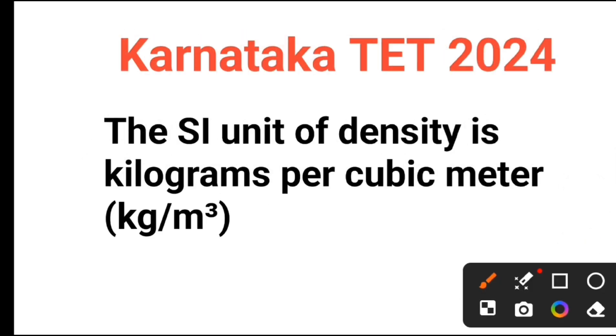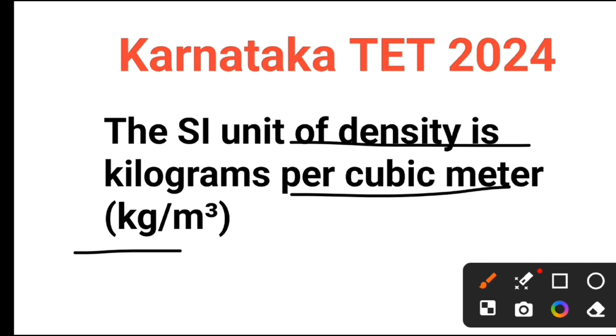The SI unit of density is kilogram per cubic meter, also written as kg per meter cube. In the paper, they have given kg per meter cube.